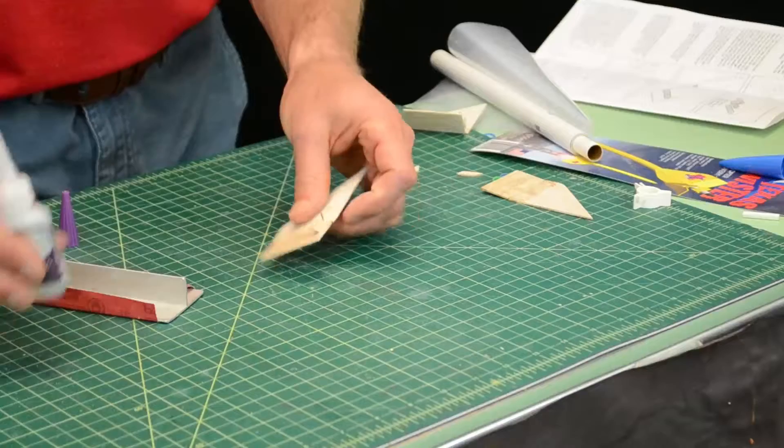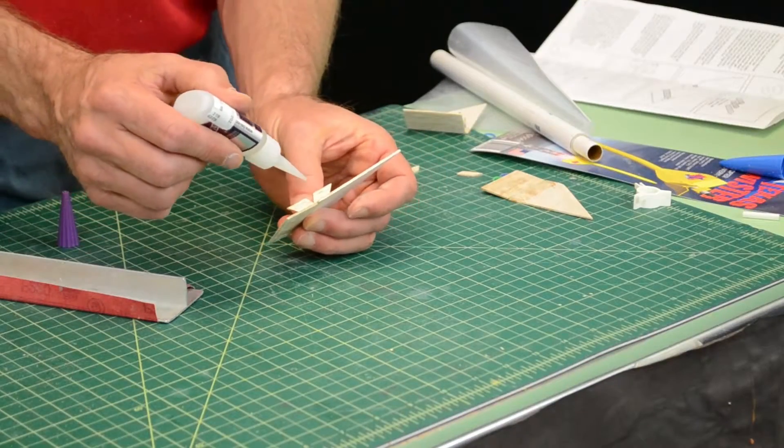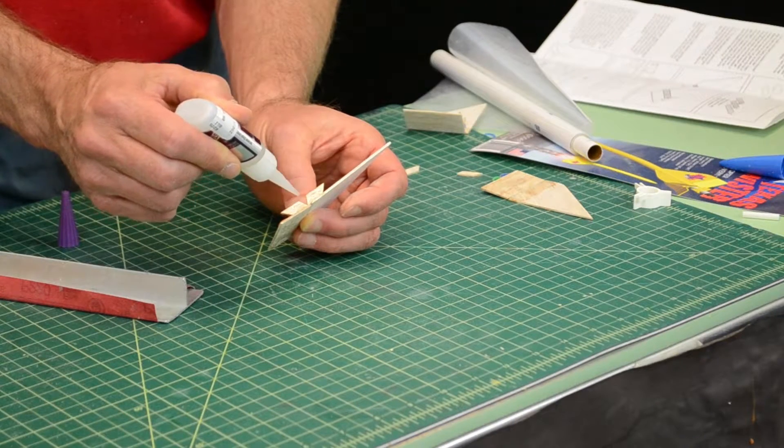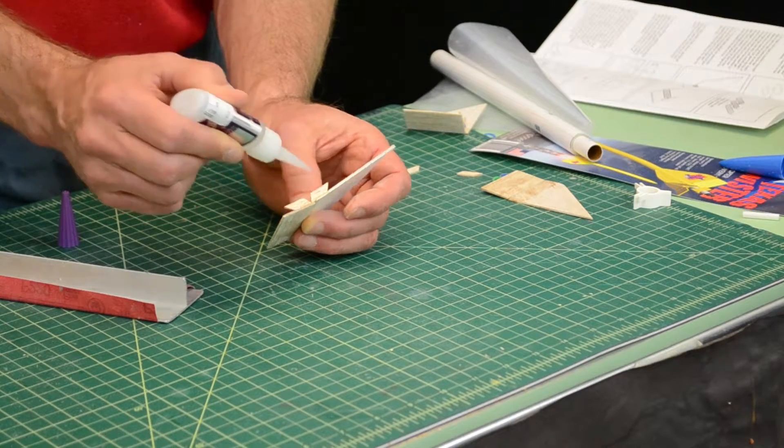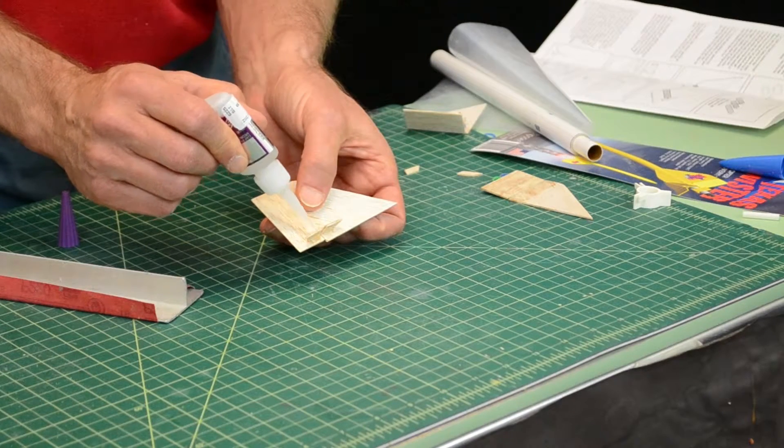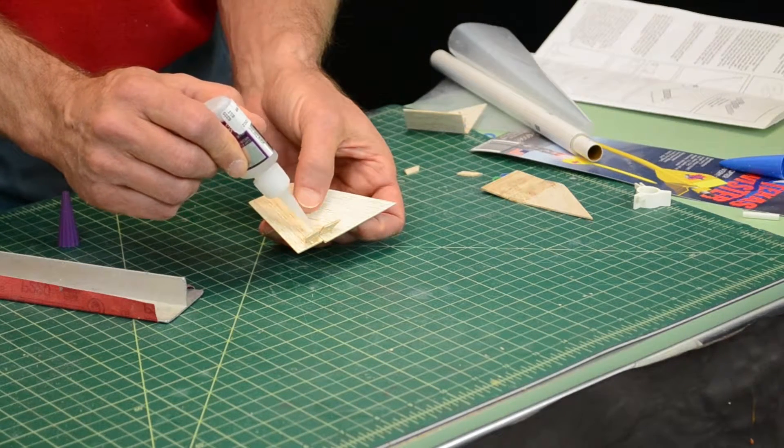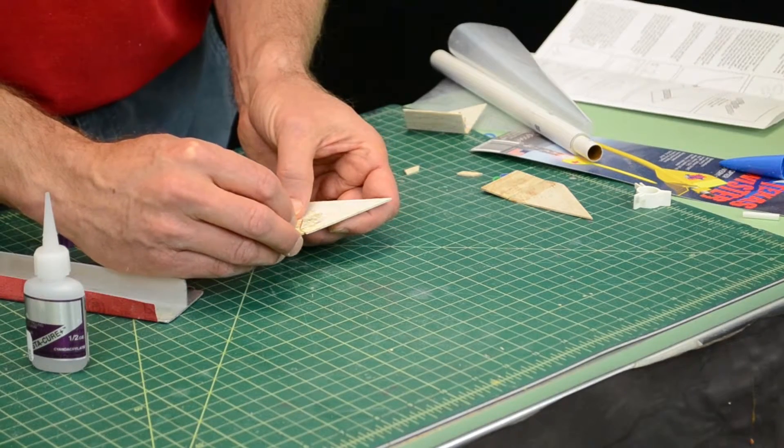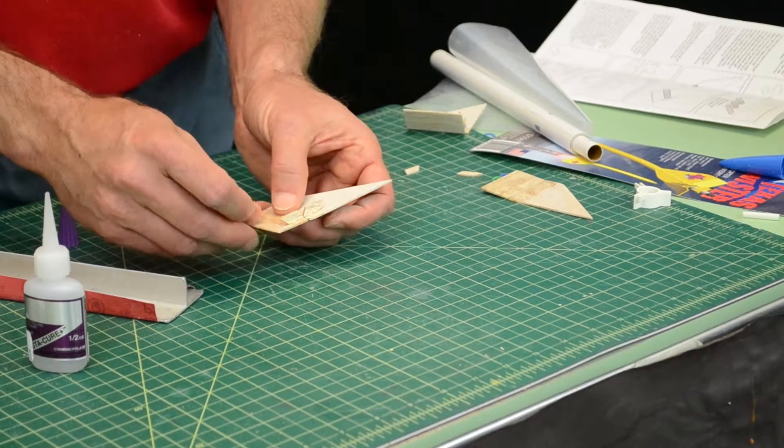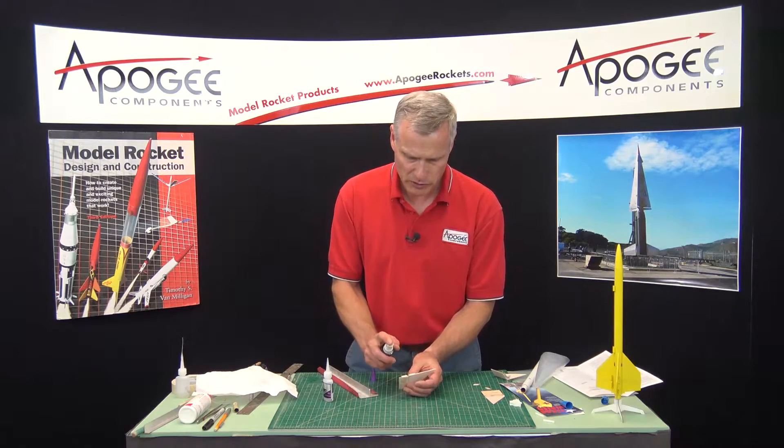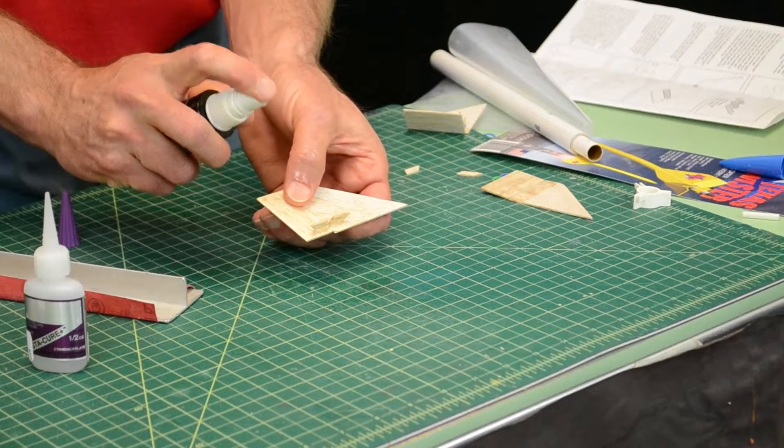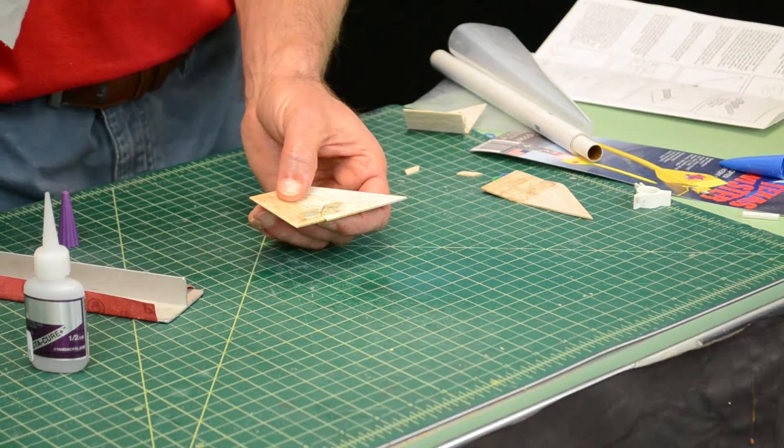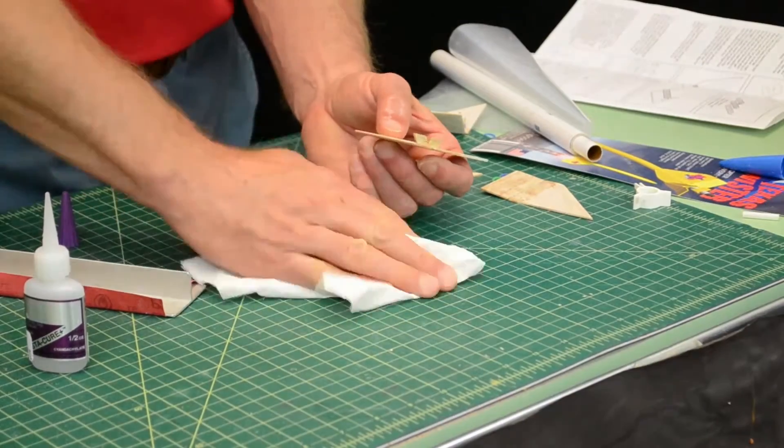Okay. Now I want to put a fillet of glue on there because I don't want these to pop off. Because if they pop off, bad things happen. This one wants to slide around. I'm going to use some super glue accelerator. It doesn't take much. And that will be almost instantly hard.